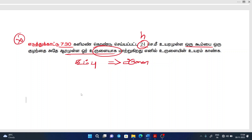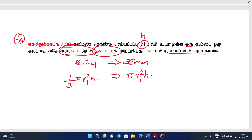If you have a cone, you can use a cone. Let's see if you have two formulas. What is pi r squared h? If you have a cone, it is pi r squared h.